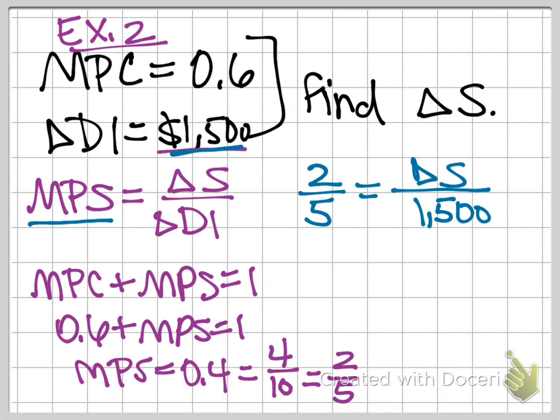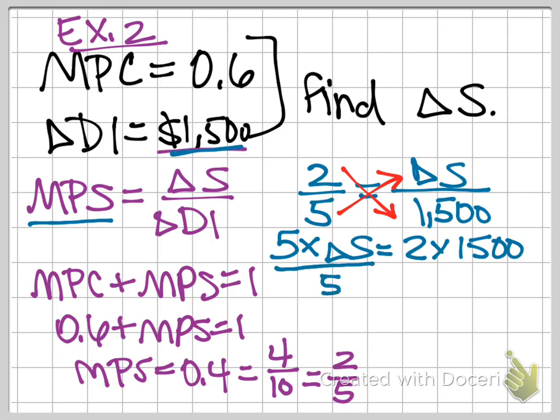Don't get scared here. It's not too bad. We're simply going to cross multiply across that equal sign there. I'm actually not even going to multiply it all the way out, I'm just going to write it out. 5 times the change in savings equals 2 times 1,500. Why did I not work it out yet? Because now I'm isolating this, so I'm going to divide both sides by 5.